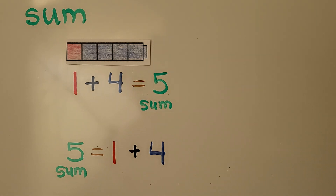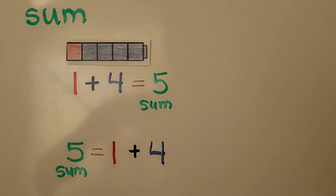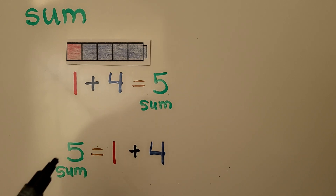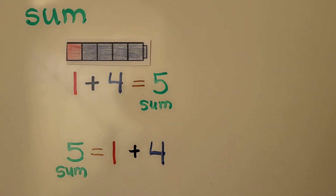We can write the sum at the end, after the is-equal-to symbol, or we can write it in front, to the left of the is-equal-to symbol. It doesn't matter, as long as it shows the same amount on both sides of the is-equal-to symbol.